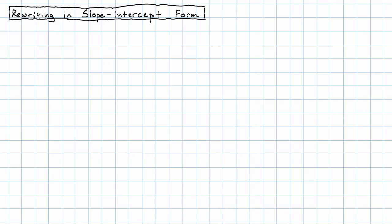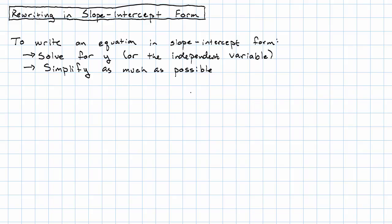Now we've discovered that the slope-intercept form is really very useful. What if we have an equation in some other form and we want to rewrite it in slope-intercept form? I can explain the process really quickly, but actually doing the process can be a little bit more complicated. First, we solve for y, or the independent variable more generally, and then we simplify as much as possible.